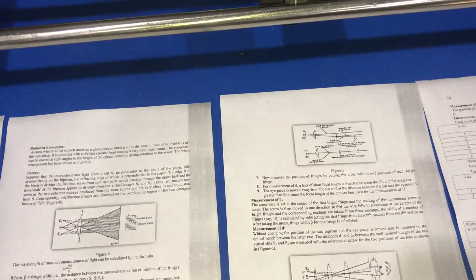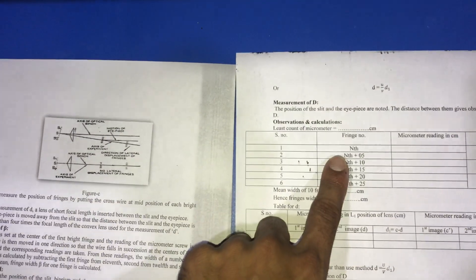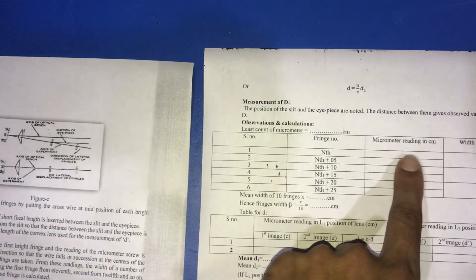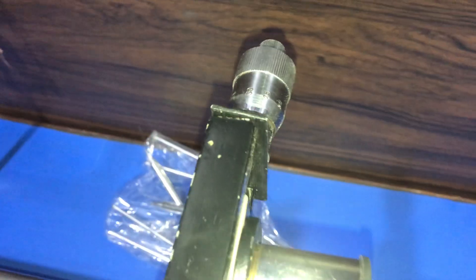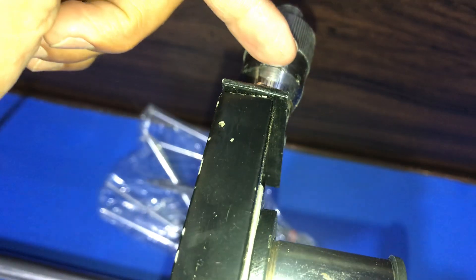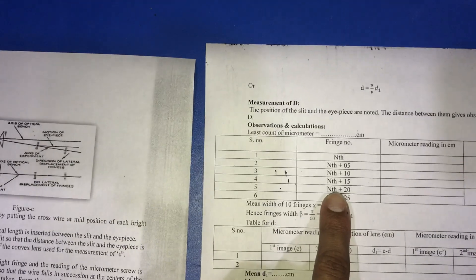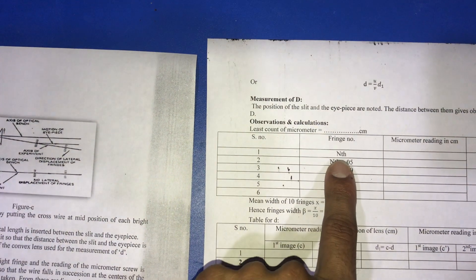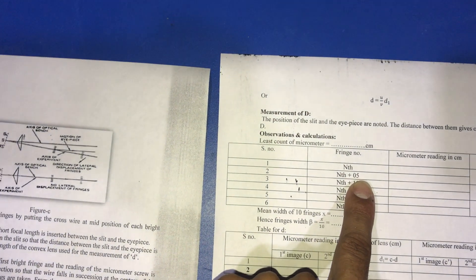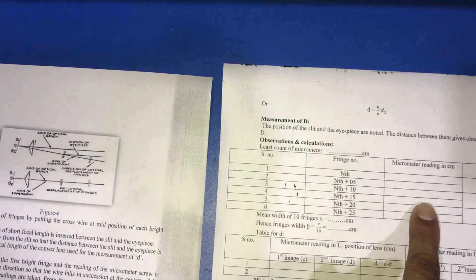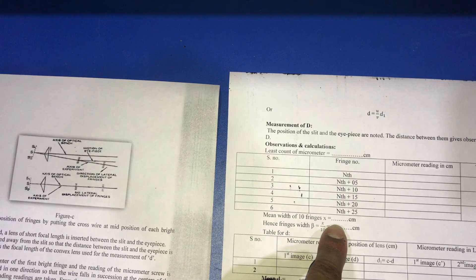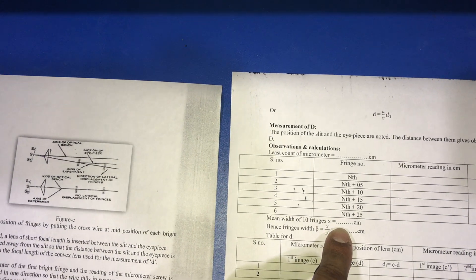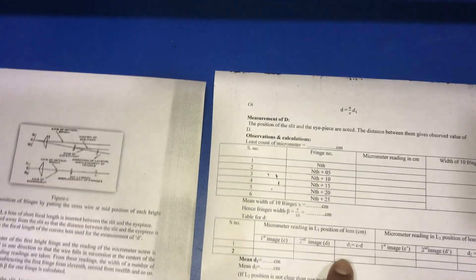Now we set the cross wire on one of the bright fringes and take it as the nth fringe, and note down the reading of the micrometer. After that, we shift the cross wire to n+5 fringe and note the reading. We repeat this process till we reach the n+25th fringe.